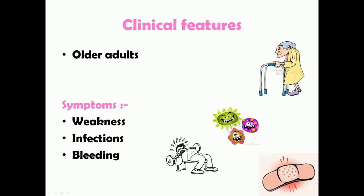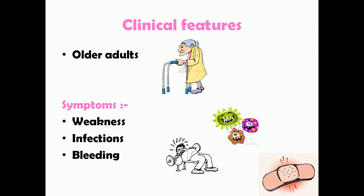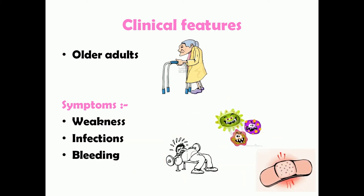The clinical features of myelodysplastic syndromes: it is very common in older adults, similar to acute myeloid leukemia, most often above the age of 70. Symptoms include weakness, recurrent infections, and bleeding, which suggest underlying bone marrow failure. Weakness is due to anemia from decreased RBC count, infections are due to decreased WBC count, and recurrent bleeding is due to thrombocytopenia — decreased platelet production from the bone marrow.